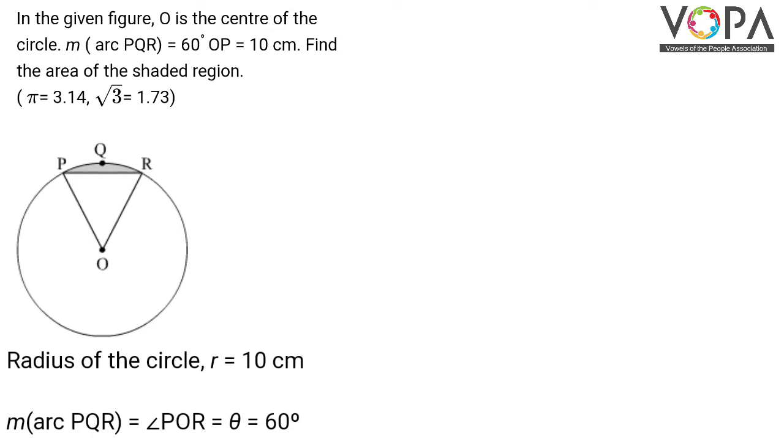π is 3.14 and the value of √3 can be taken as 1.73. Now, the shaded region is a segment.